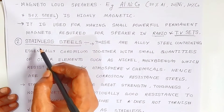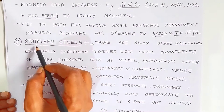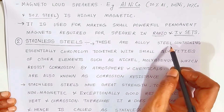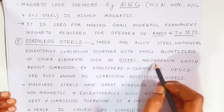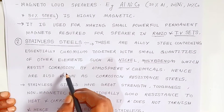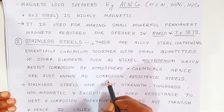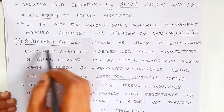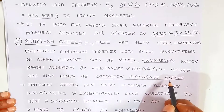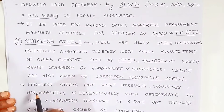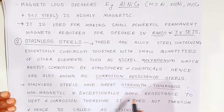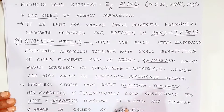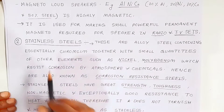The second type is stainless steel. These are alloys of steel containing essentially chromium, together with small quantities of other elements such as nickel and molybdenum, which resist corrosion by atmospheric chemicals. Hence they are also known as corrosion resistance steels. Stainless steels have great strength, toughness, are non-magnetic, and have exceptionally good resistance to heat and corrosion. Therefore they do not tarnish, which is why they are called stainless steel.